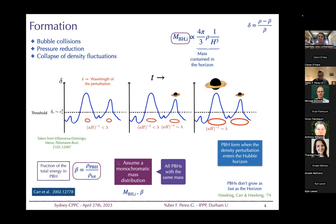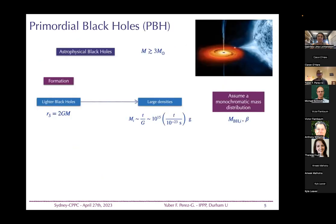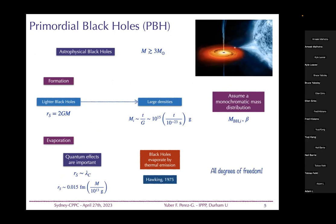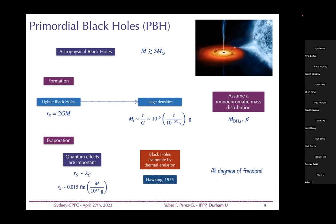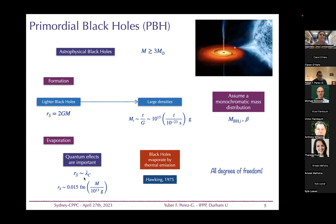After black holes form, since they can have very small Schwarzschild radii, Hawking noticed that if the radius is of the same order as the Compton wavelength of some particle, quantum effects become important. This leads to black hole evaporation: they start emitting particles via Hawking radiation. Crucially, they emit all degrees of freedom in nature, even those that don't interact with the Standard Model.